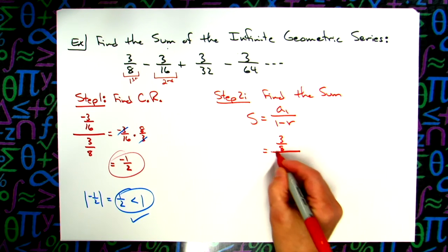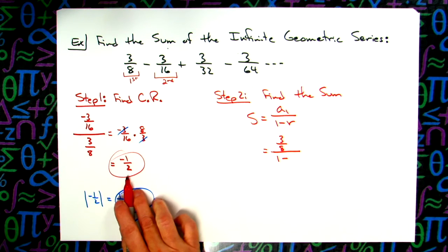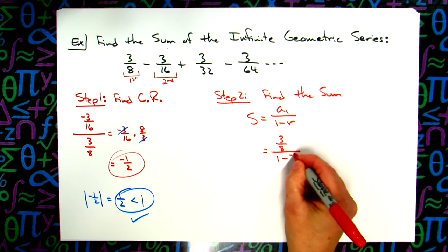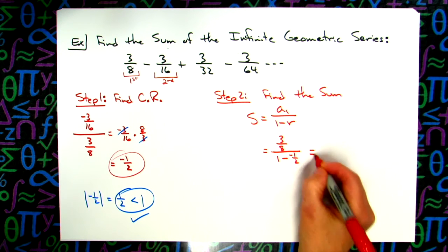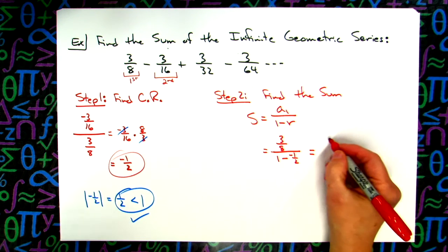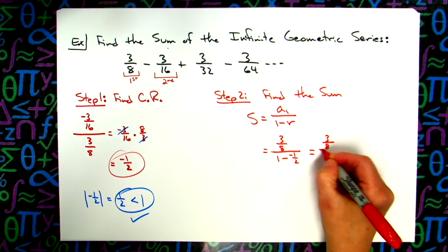1 minus R. My R is negative 1/2. We'll work that across. 1 basically plus 1/2. What is that? 3/2. So 3/8ths over 3/2.